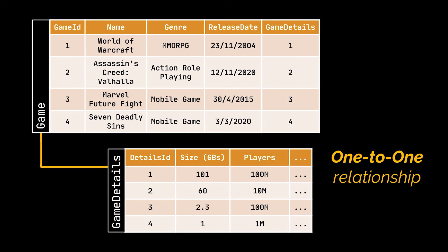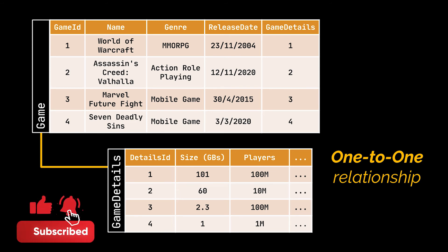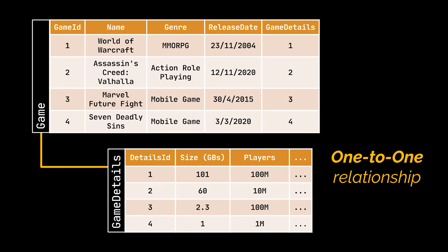So far, all we did was create our tables, populate them, and create relationships between them in order to retrieve the information we need. But what if we face the need to change the data stored inside these tables — like editing the name of a game, increasing the number of players, or modifying a streamer's name?